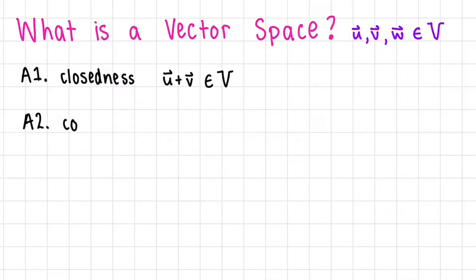A2 is commutativity. This means that order doesn't matter. If you add U plus V, that's the exact same thing as doing V plus U.